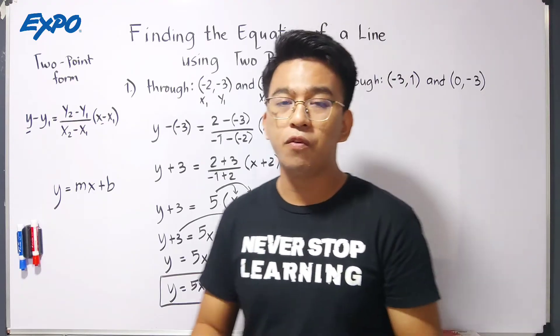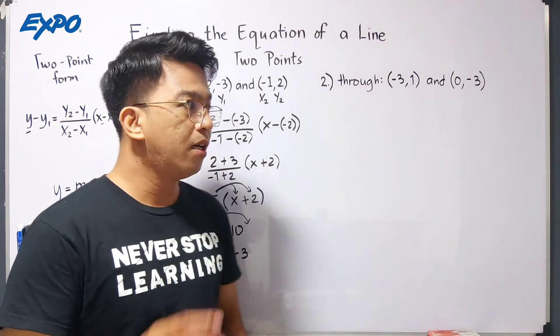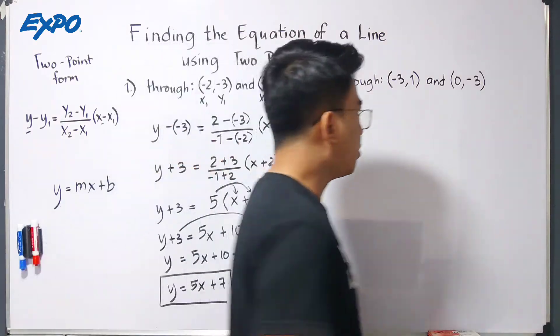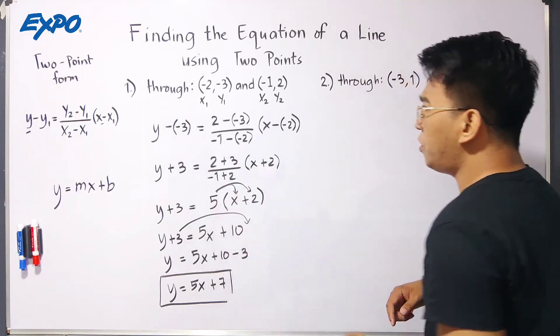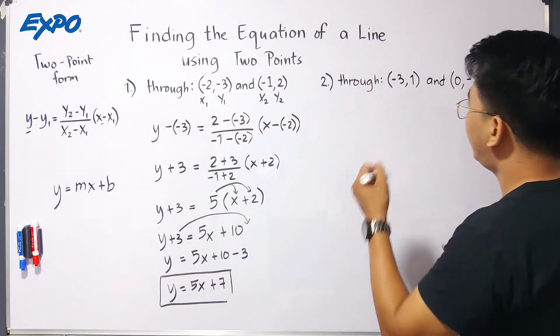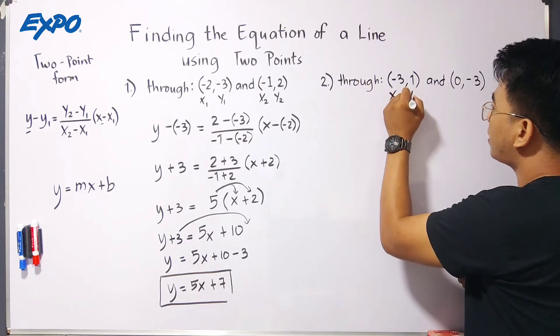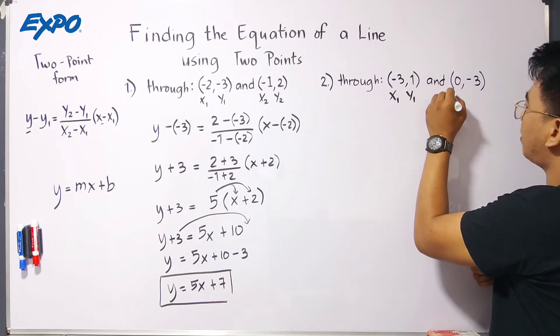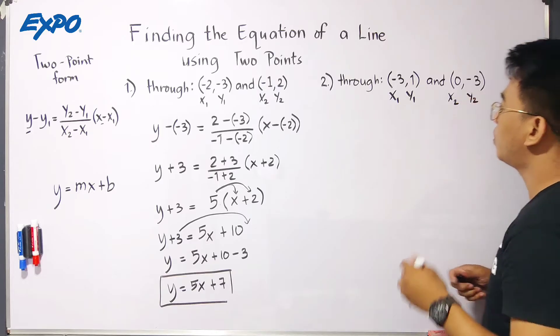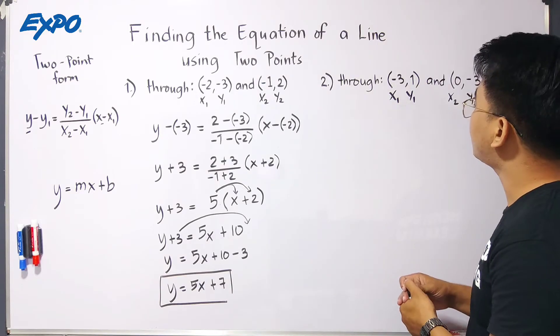So, let's try item number 2 for you to practice more about this topic. Using the two-point form again, let's label this. This is your x sub 1, y sub 1. This is your x sub 2. And this is your y sub 2.